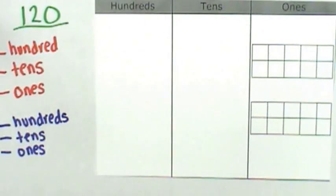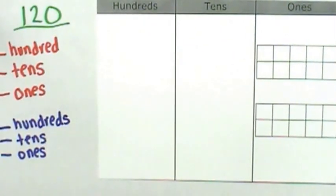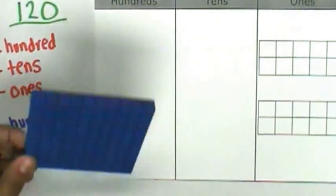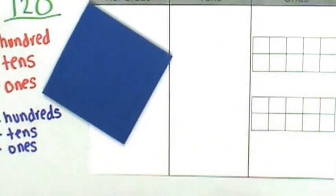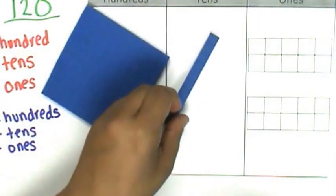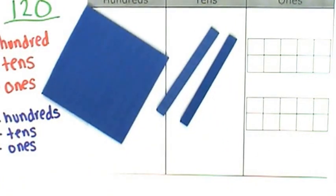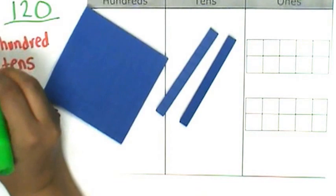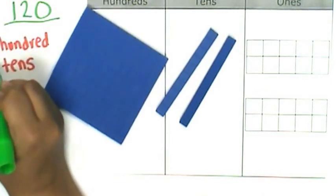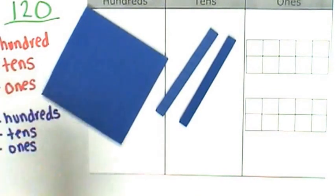Now let's represent 120. 120 is composed of one 100 and two tens. 10, 20. 100, two tens and zero ones.